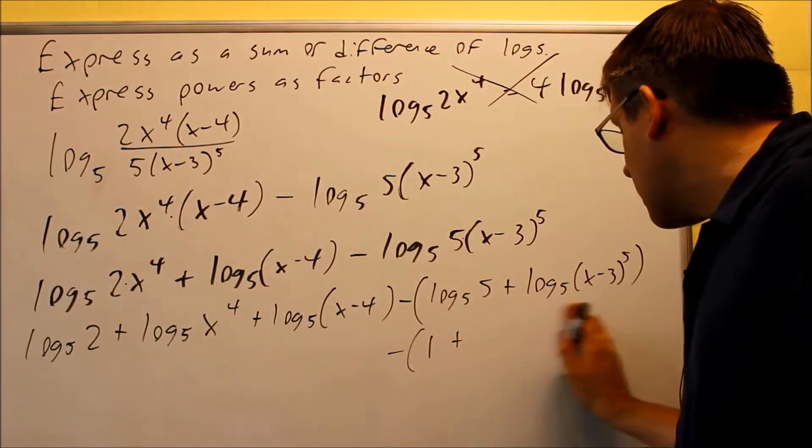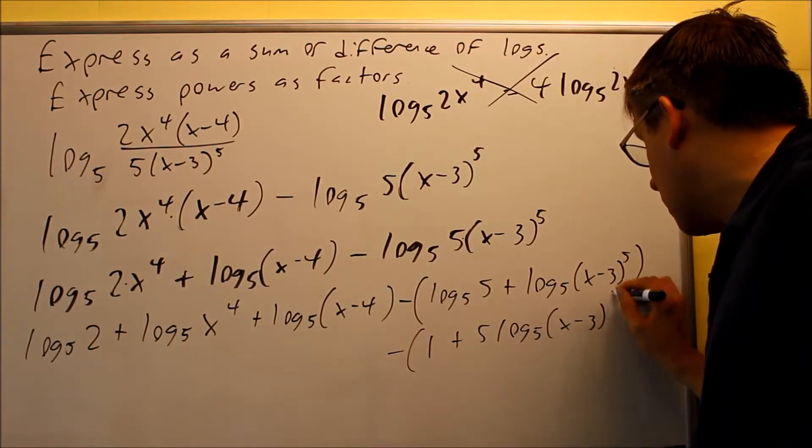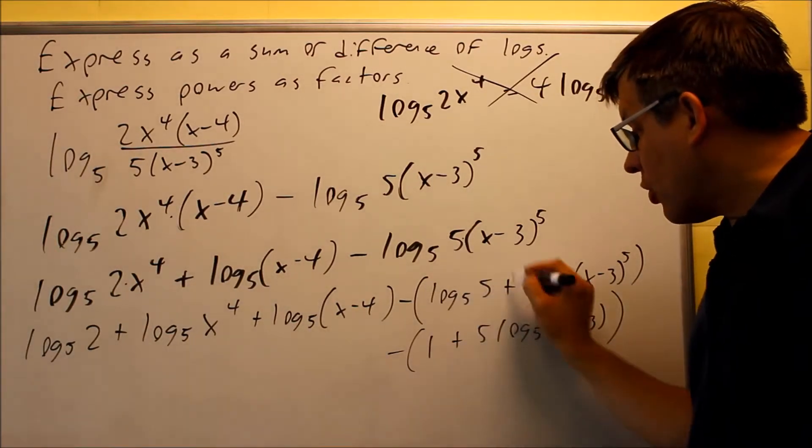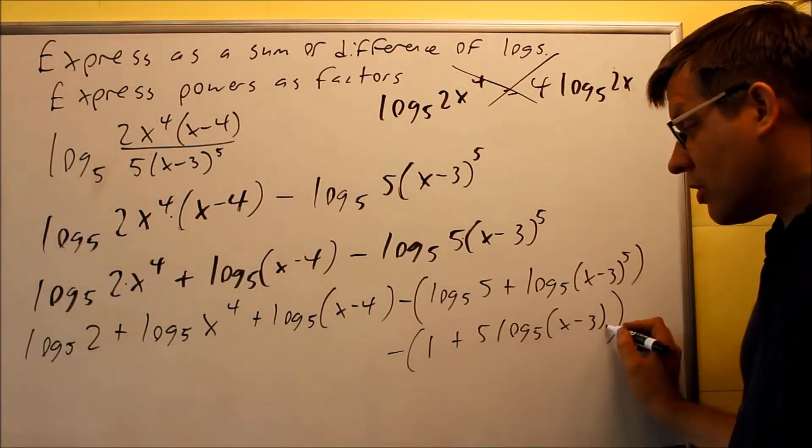Now, of course, what I would do here is I can bring down the 5 and then do log base 5 of (x minus 3), because that's what I'll do on my next step. So I put a 1 in here. Log base 5 of 5 was a 1. I brought this power down that's still inside these parentheses.